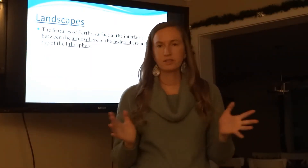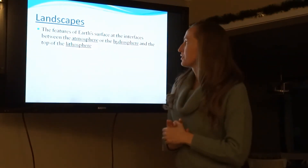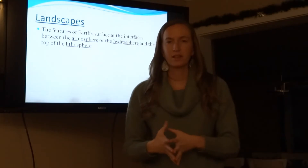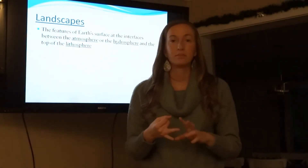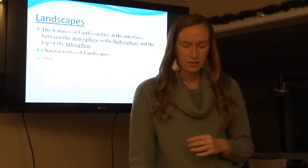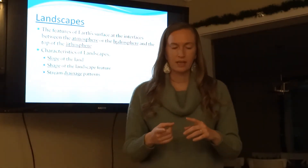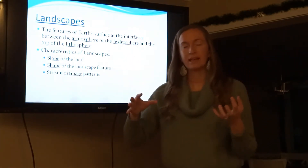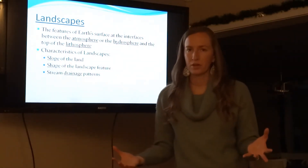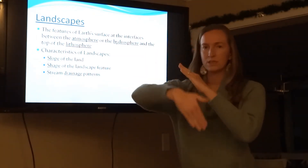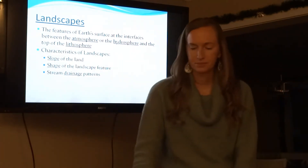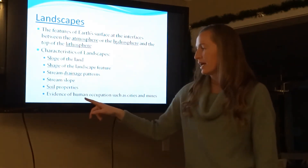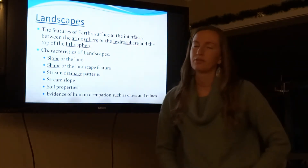The last part of this unit covers landscapes: the features of Earth's surface at the interfaces between the atmosphere, the hydrosphere, and the top of the lithosphere. Landscapes are things like mountains, plains, and plateaus — basically the shape of the land. Characteristics of landscapes include the slope of the land, the shape of the feature, its drainage pattern, stream properties, soil properties, and evidence of human occupation such as cities and mines.